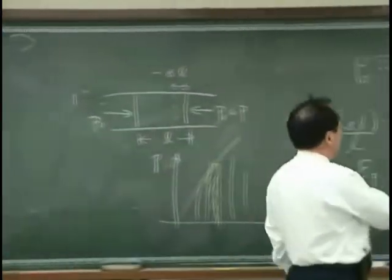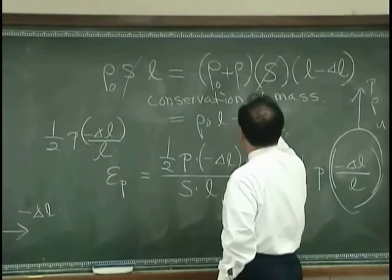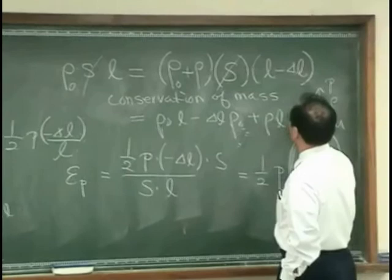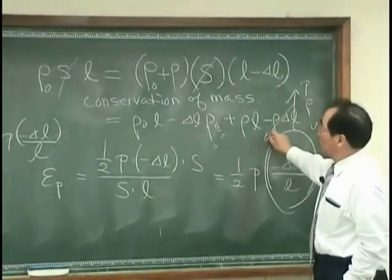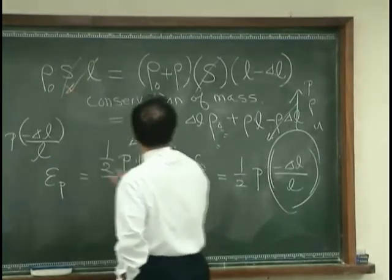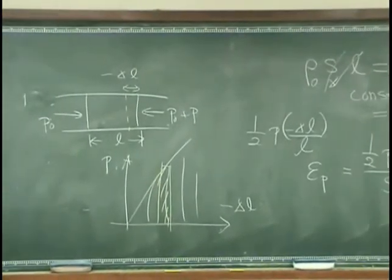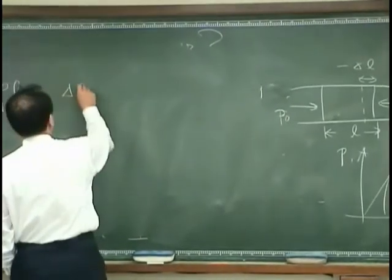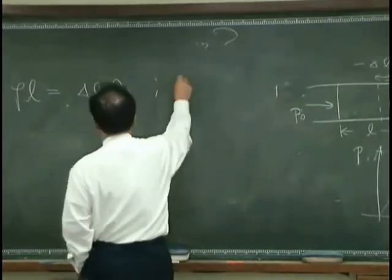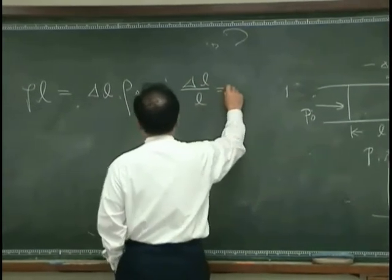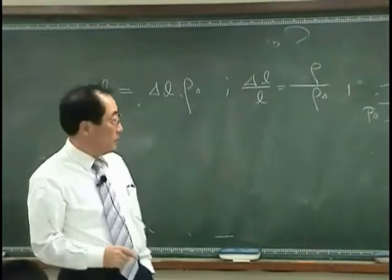Then what we have over here is S go away and I have rho zero L minus delta L rho zero and plus rho L and minus rho delta L and obviously this one is small therefore neglected. This one and this one and this one go away and I have rho L is equal to delta L rho zero. Therefore I can say that the delta L over L has to be same as rho over rho zero. And then